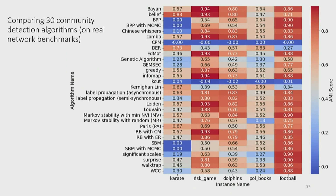We also evaluated on real networks with ground truth. For example, the karate club network shows how accurately algorithms retrieve the actual two-group split. For karate club, the belief propagation algorithm is the best. However, there's a no-free-lunch theorem here: no algorithm is better than everything else for every real network, because how topology translates to communities depends on whether you're looking at biological gene networks, social networks, international relations, or financial securities. Our algorithm's AMI values are among the largest for most of these networks, while some algorithms fail almost consistently. Combo performs relatively well, and for some networks the best achievable AMI is 83%.